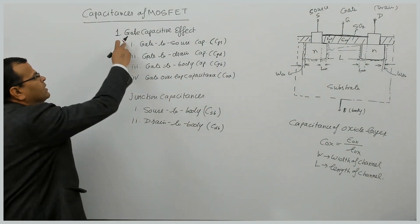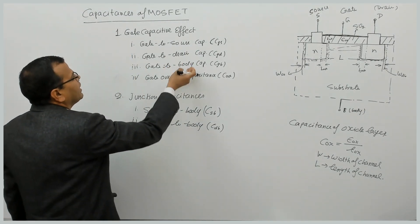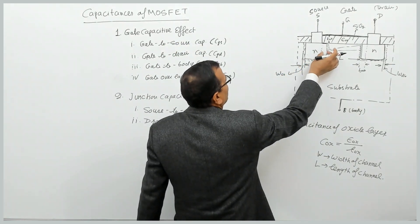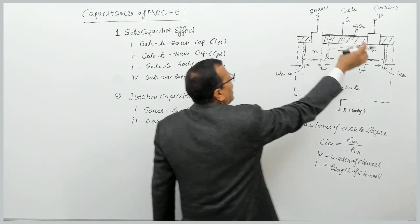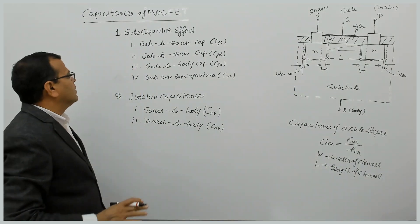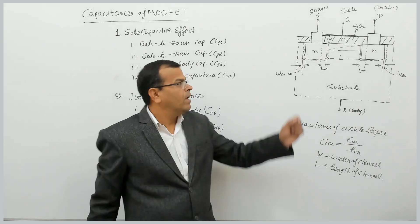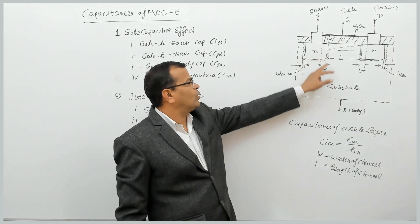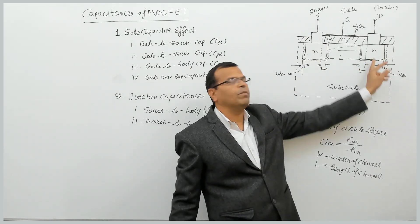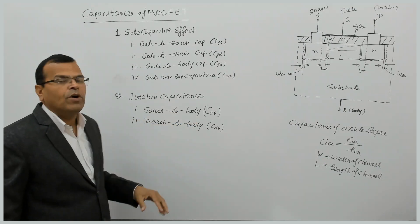These are the four capacitances we will discuss. The overlap capacitances should be added to gate-to-source and gate-to-drain capacitances respectively. Then there are junction capacitances: the junction between source and body offers a capacitance, and the junction between drain and body offers another capacitance — these are the source-to-body and drain-to-body junction capacitances.